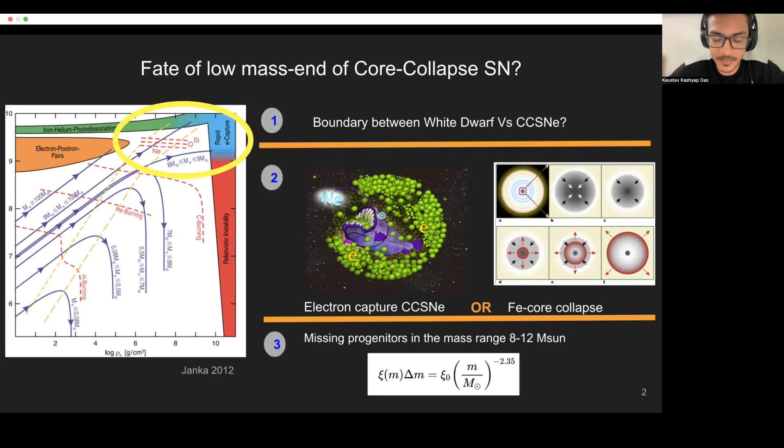Is the fate of the stars to form electron capture supernovae, which is kind of like what's shown in the image, but except for a fish eating up electrons, it's oxygen and neon atoms which eat up electrons, which then induces a collapse? Or is it the more conventional iron core collapse, which we are more familiar with?